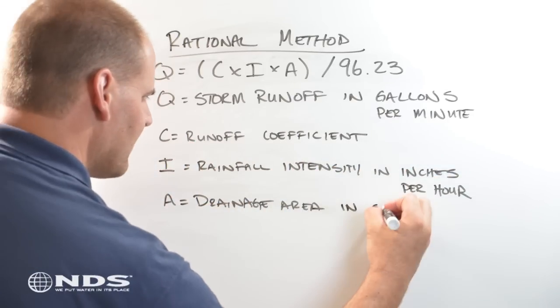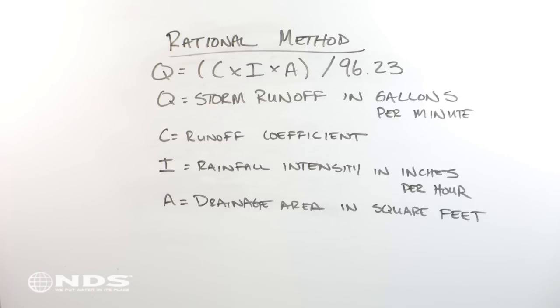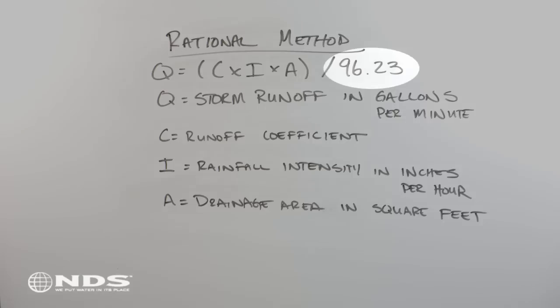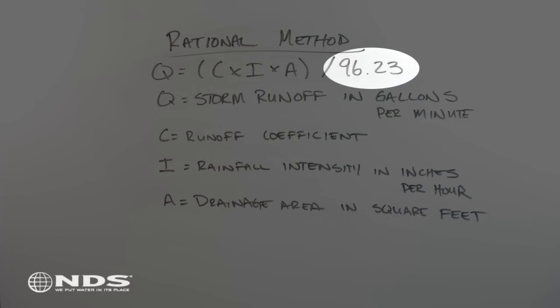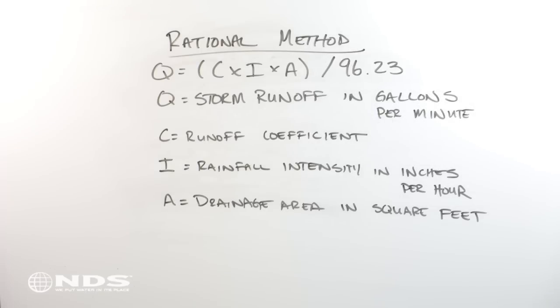C is the runoff coefficient, I is the rainfall intensity in inches per hour, and A is the drainage area in square feet. 96.23 is a conversion factor when you want the flow rate in gallons per minute, and your drainage area is in square feet. Each of these will be explained in depth shortly.